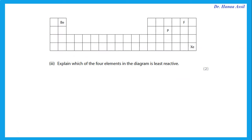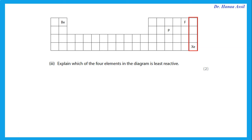Explain which of the four elements in the diagram is least reactive. The one that is least reactive is the one in group 0, which we refer to as noble gases. So the least reactive element in this choice is xenon. If we say 'explain,' we say xenon is in group 0 or noble gases and has a full outer shell of electrons, which is why it is unreactive or inert.